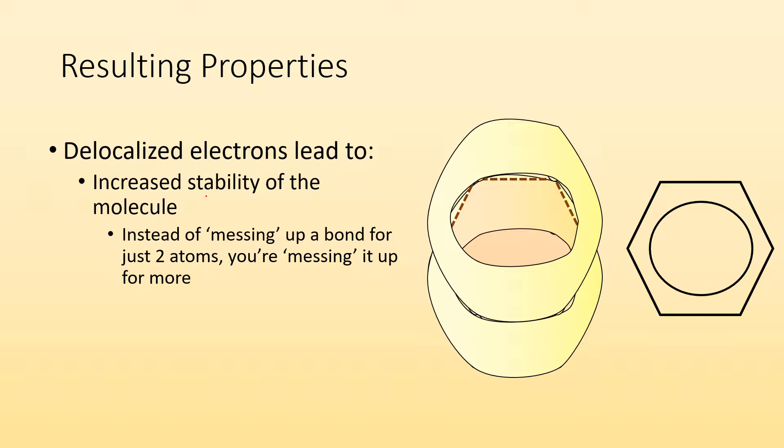They're doing this multiple bond thing. They're satisfying octets. They're happy. And instead of just messing it up for two atoms, you got to mess it up for a bunch of atoms. So there's an increased stability. And in organic molecules, these delocalized electrons are responsible for a lot of the colors that we see in organic molecules.